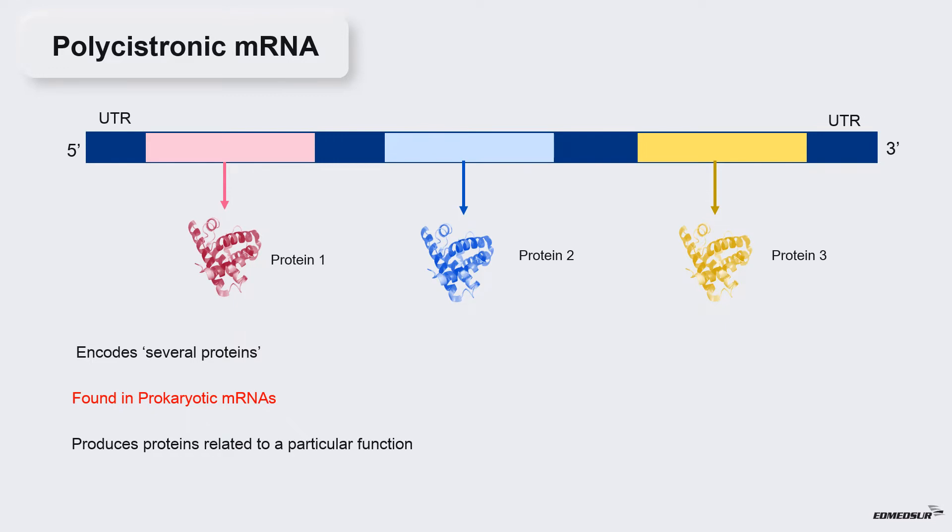For example, if a bacterial cell wants to use lactose as energy source, it will transcribe an mRNA molecule that will encode for multiple protein products necessary for lactose metabolism. With polycistronic mRNA, prokaryotes have less flexibility in regulating gene expression. This is because when they produce a particular mRNA, all of those protein products on that polycistronic mRNA are going to be produced simultaneously.